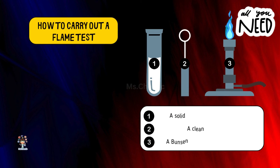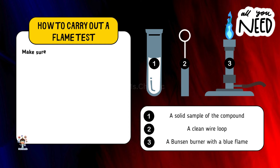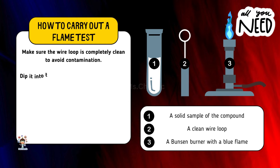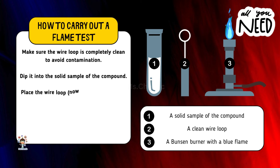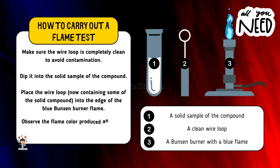How to carry out a flame test: Make sure the wire loop is completely clean to avoid contamination. Dip it into the solid sample of the compound. Place the wire loop, now containing some of the solid compound, into the edge of the blue Bunsen burner flame. Observe the flame color produced and make a record.